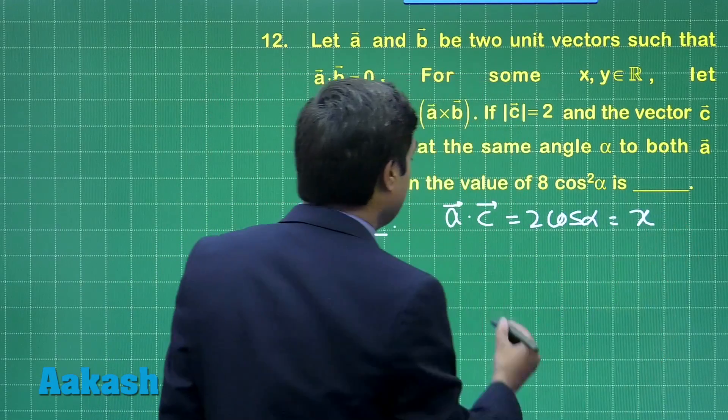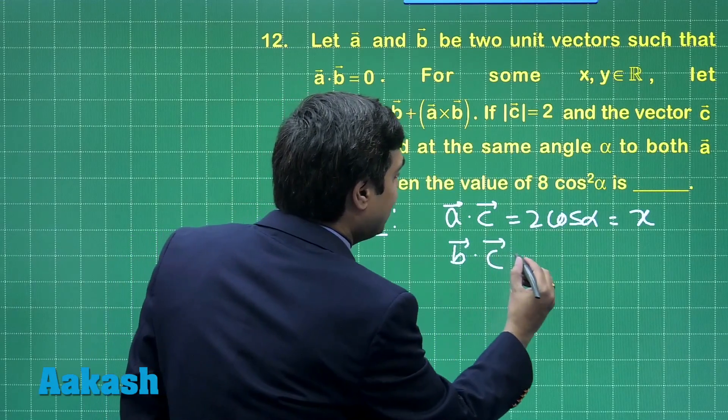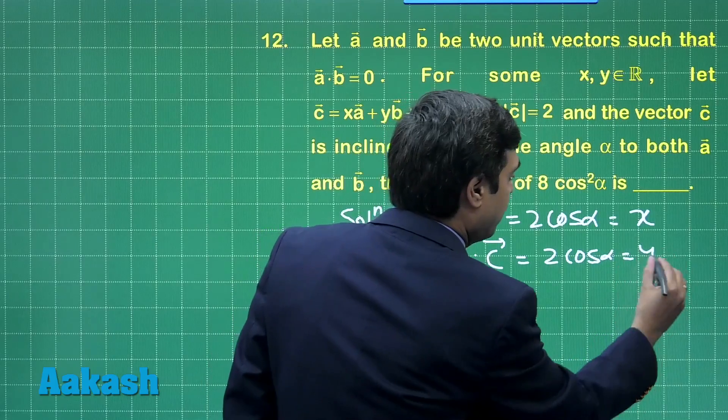Similarly, when we go with b dot c, comes 2 cos alpha, that is y.